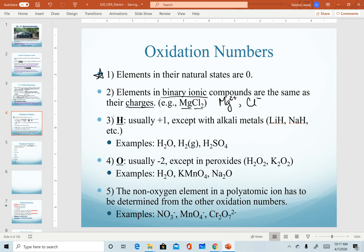For rule number three, hydrogen will usually be a plus one. The exceptions to this are when it's bonded with an alkali metal. Because alkali metals would have to be a plus one, that forces hydrogen to actually become the anion form, and so this would be lithium hydride. This only happens with the alkali metals. Some common examples that you could use to practice assigning oxidation numbers with hydrogen.